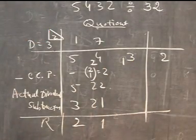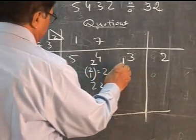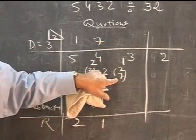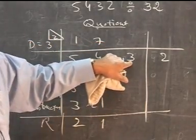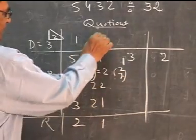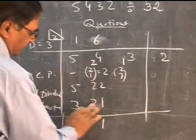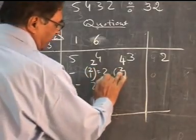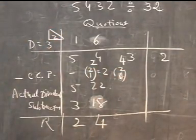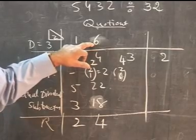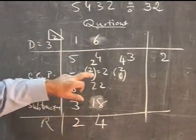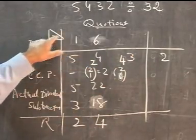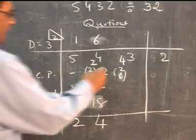Now care should be taken: we have to subtract back the crisscross product of 2 and 7, which is 14. Since 14 cannot be subtracted from 13, we decrease the quotient by 1 - we put 6 instead of 7. So 6 times 3 is 18, and 22 minus 18 is 4. We place 4 before 3, giving 43. Then the vertical product of 2 and 6 is 12, so the next dividend is 43 minus 12 = 31.